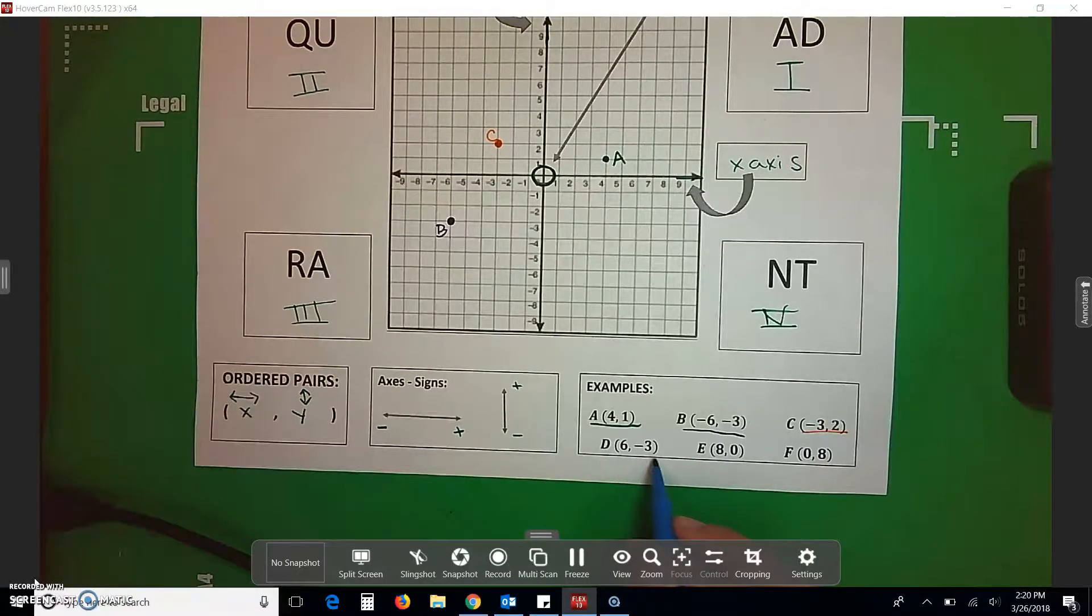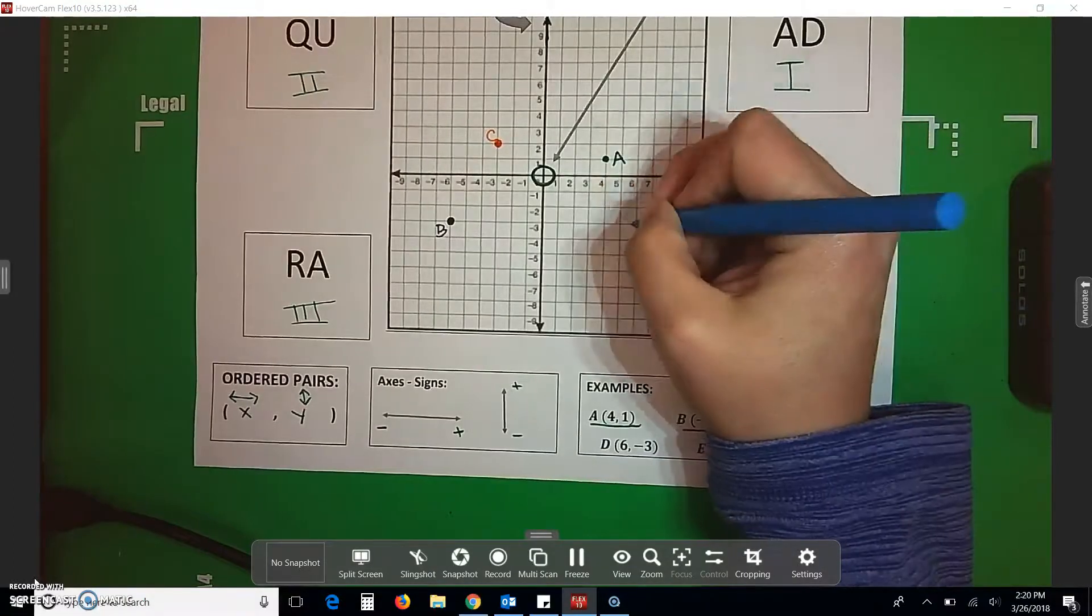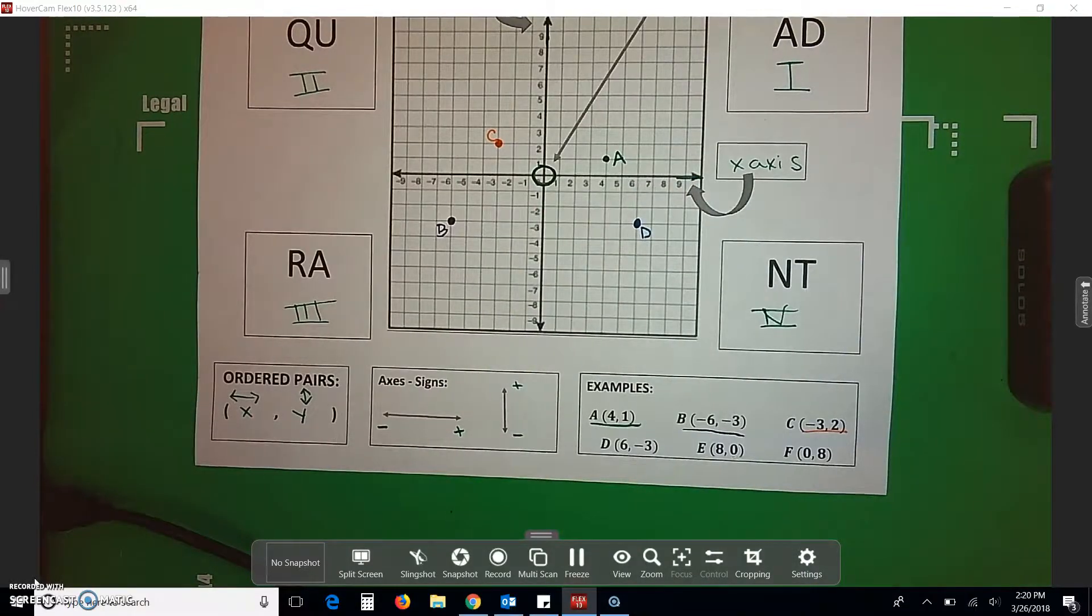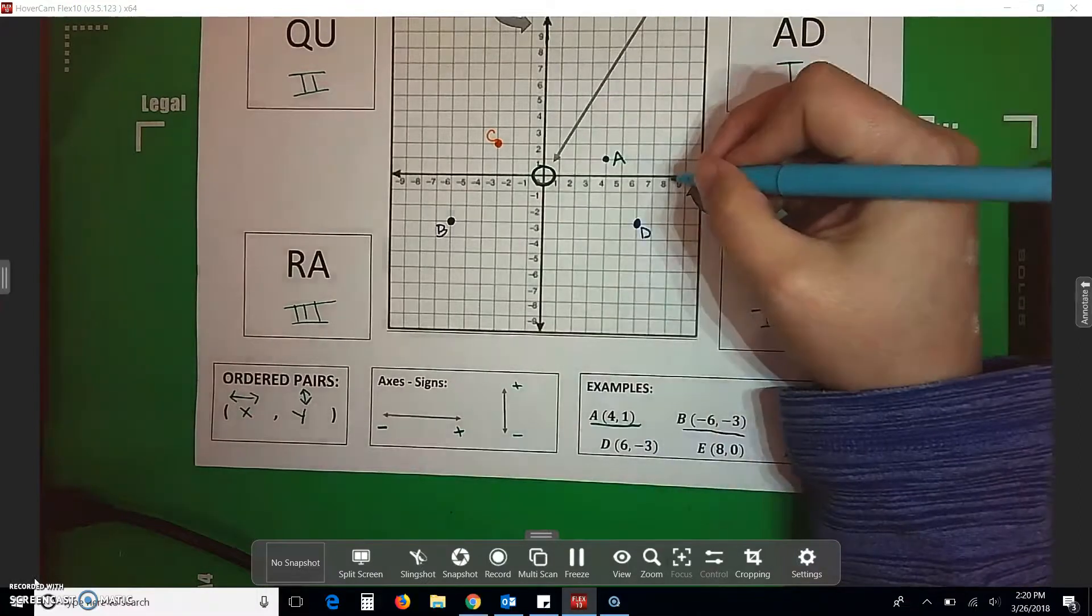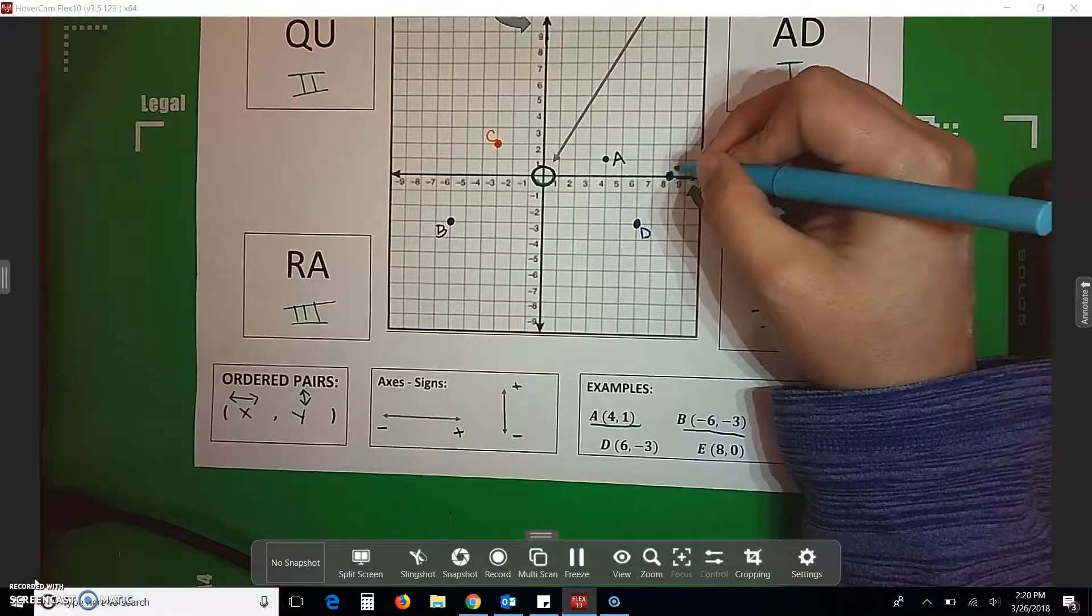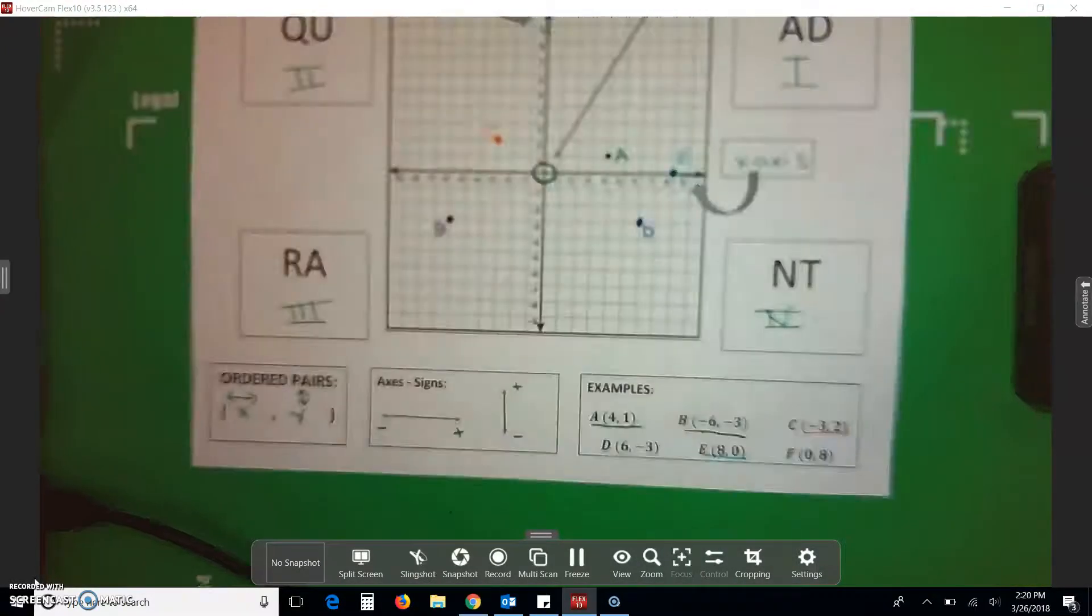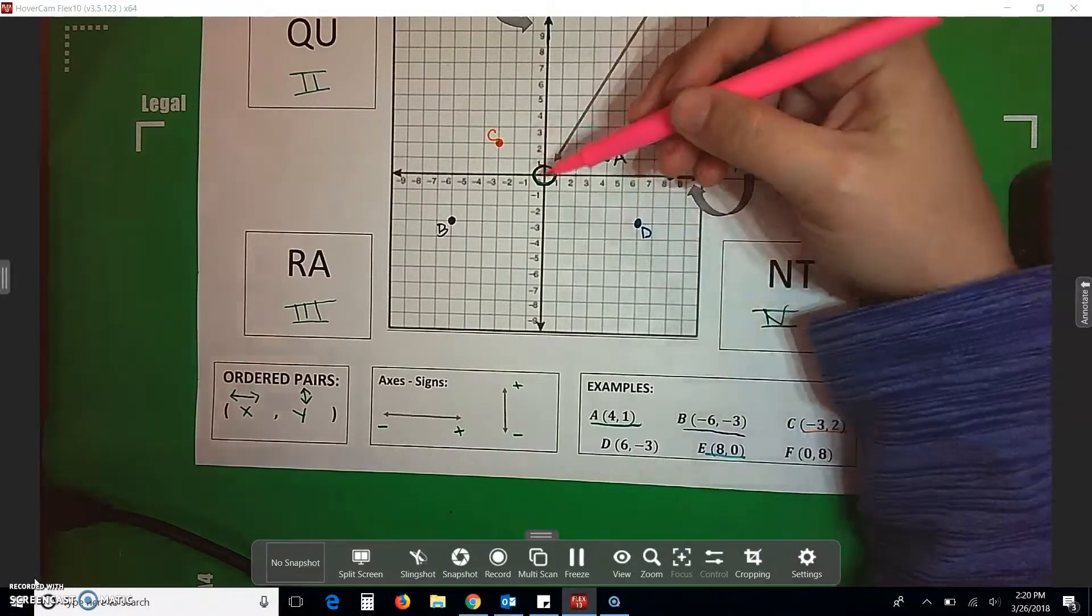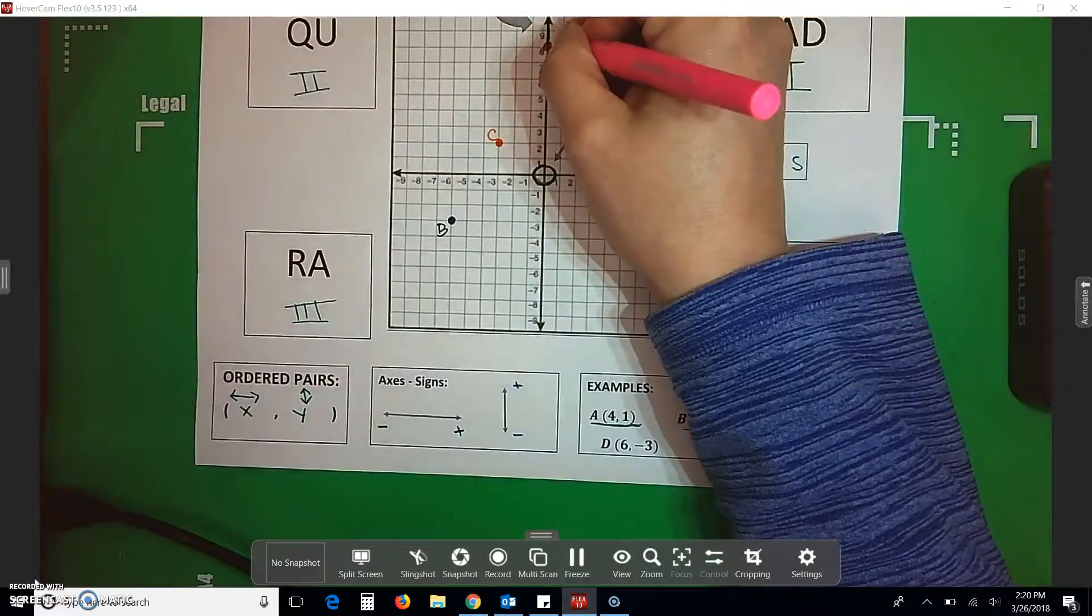And we go to D, which is positive 6. Negative 3. So, we go down. E is positive 8. And then a 0, which means we sit right there on the line. And then for F, we have a 0, which means we sit right here and then we go up 8. And that's our F.